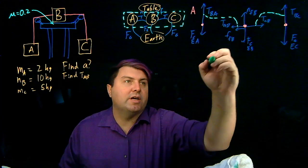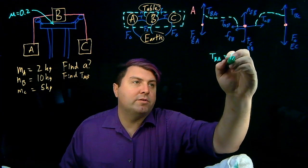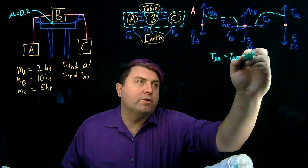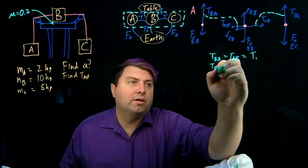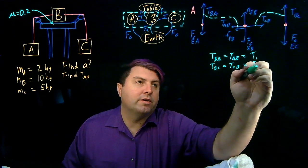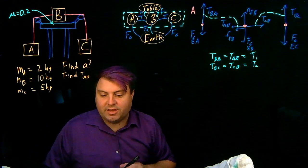So we can write for ourselves pretty quickly, TBA equals TAB. And we're just going to call this tension one. And then we have TBC equals TCB. And we're going to call this tension two. So a great start for this.